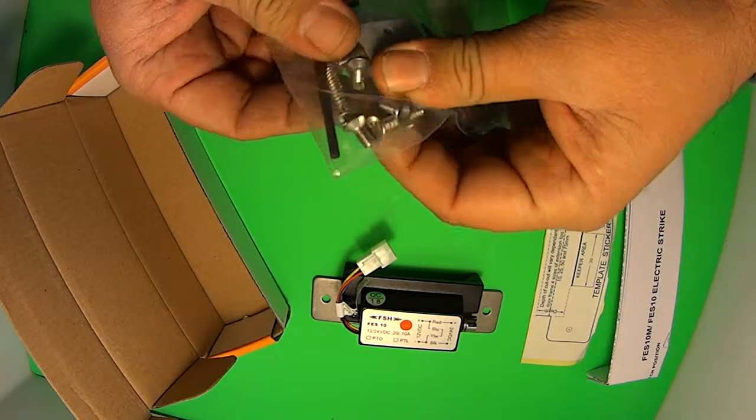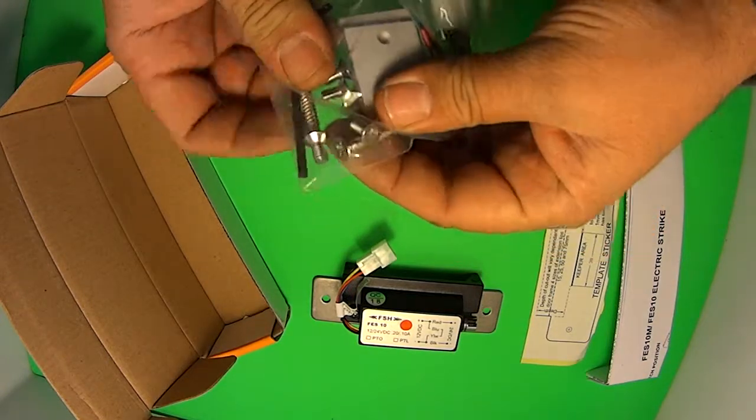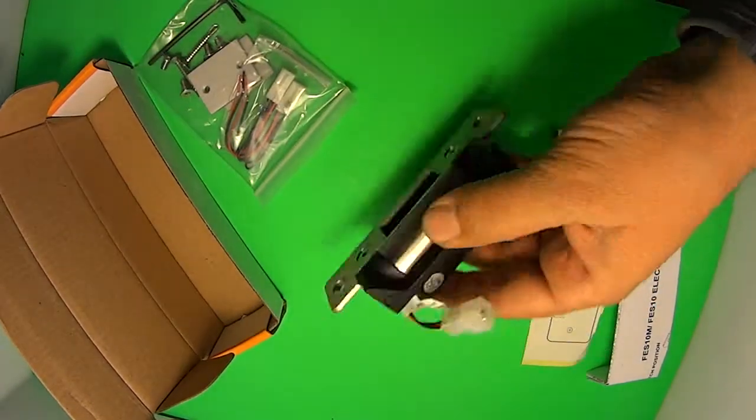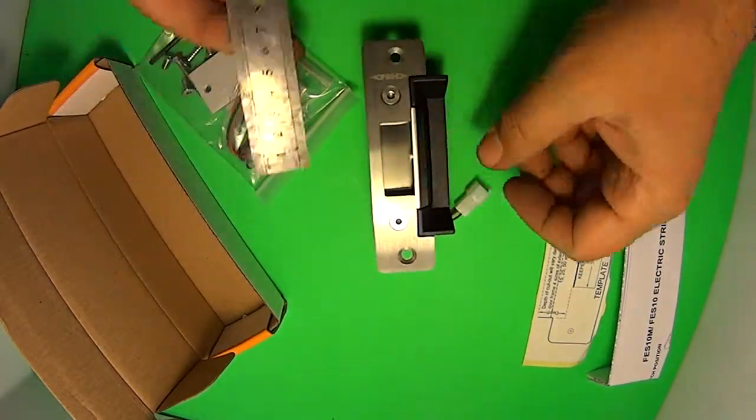All of these screws, those screws are driven by the allen key. These ones are driven by a standard P2 Phillips head. The actual striker plate itself, I'll give you some sizes on that.